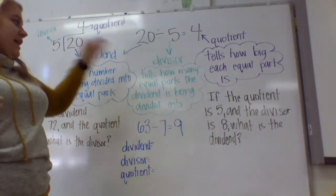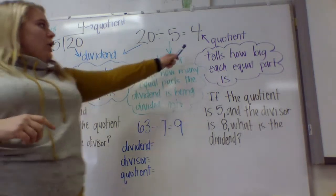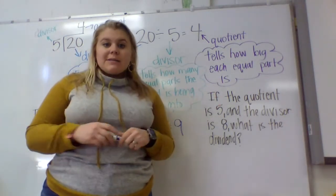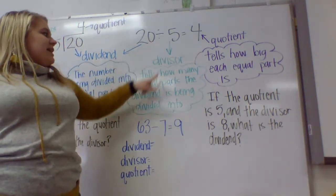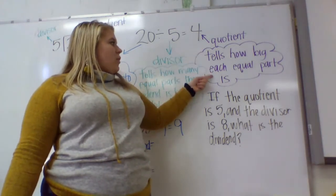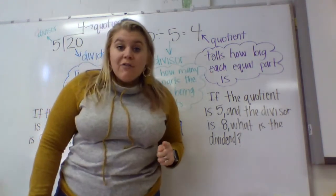The quotient is how big each equal part is. So if I have 20 stuffed animals, I'm dividing them into 5 groups. My quotient, that means how big is each equal part? Each equal part is going to have 4 stuffed animals.